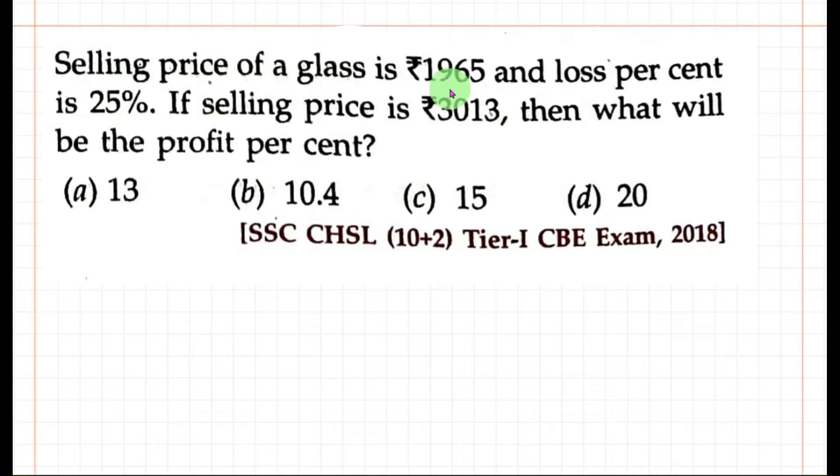Selling price of a glass is Rs.1965 and loss percent is 25%. If selling price is Rs.3013, then what will be the profit percent?